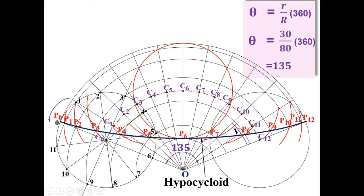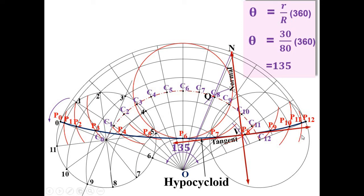Set the compass to the radius of the rolling circle, which is 30 mm. With V as the center and radius 30 mm, draw the arc on the center arc and mark the intersection point as Q. Now join O and Q and extend it up to the directing circle. Join N and V — that will represent the normal. Draw a line perpendicular to the normal and passing through V using a protractor — that will represent the tangent.